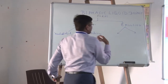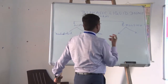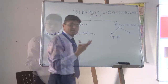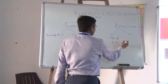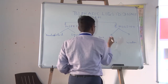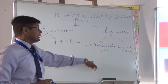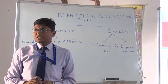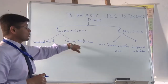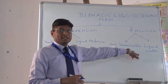Let me briefly explain the difference between both. Emulsion involves two immiscible liquids — oil and water. That is the key difference between emulsion and suspension. In suspension, the two phases are solid in liquid: one phase is solid and the other phase is the liquid medium. In emulsion, both phases are two immiscible liquids.